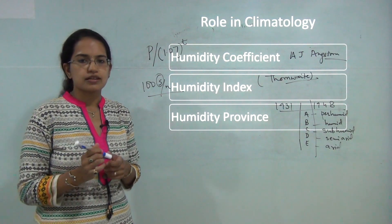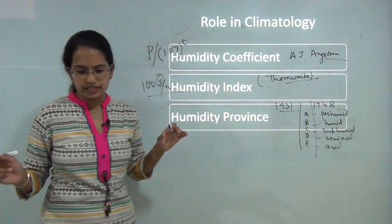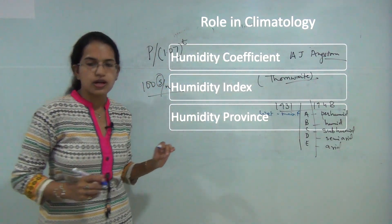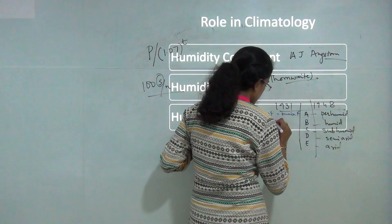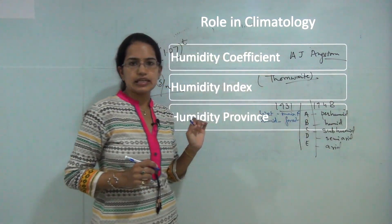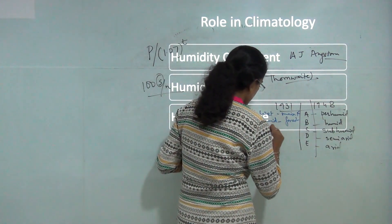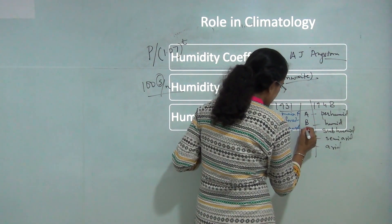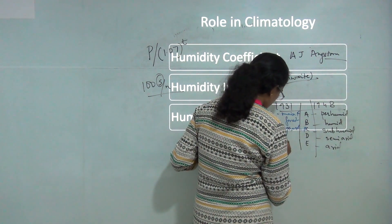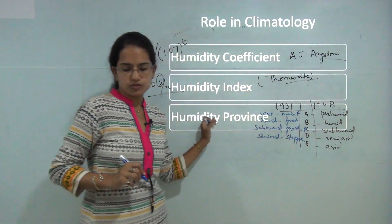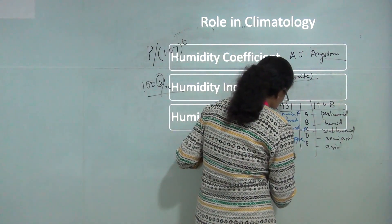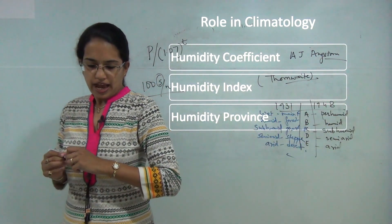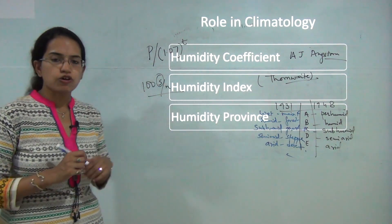In 1931, Thornthwaite explained the A region as the wet region, calling it the rain forest. The B region was called humid or the forest region. The C region was classified as subhumid and grassland. The D region was classified as semi-arid and steppes, and finally the E province was classified as arid and desert. There was a minor variation in the two provincial categorizations he laid forward.